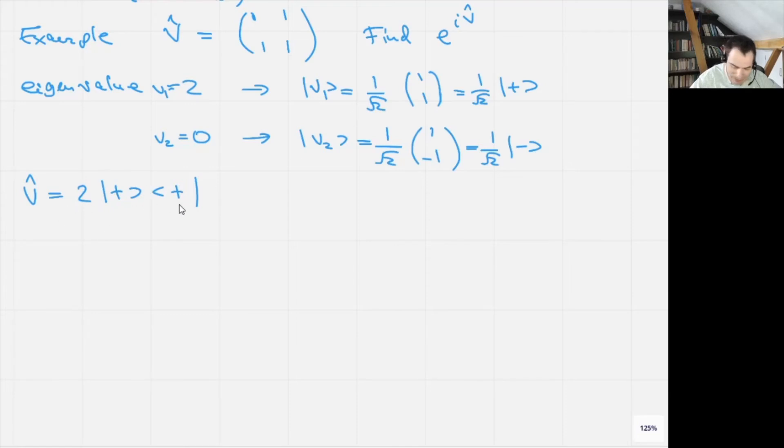So now we've diagonalized, and now we can immediately write that e to the power iV-hat is equal to e to the 2i times |+⟩⟨+|. Is this correct? Actually no, it's not correct.